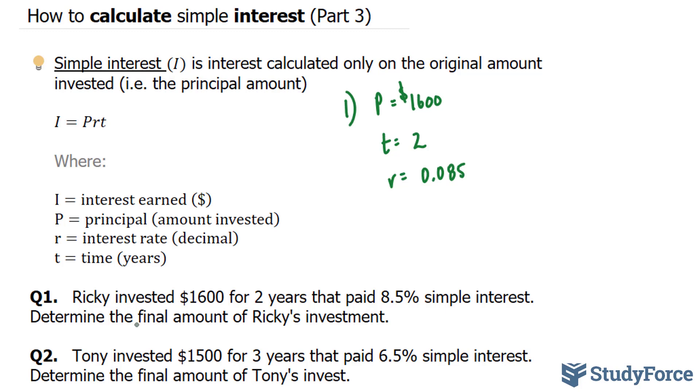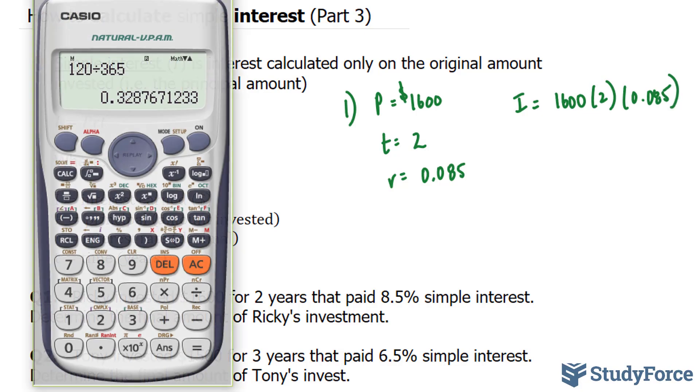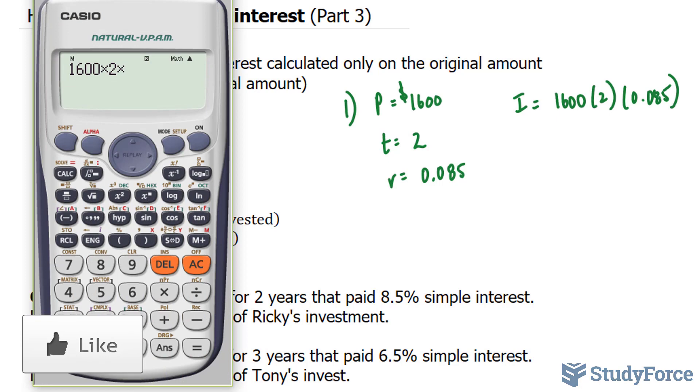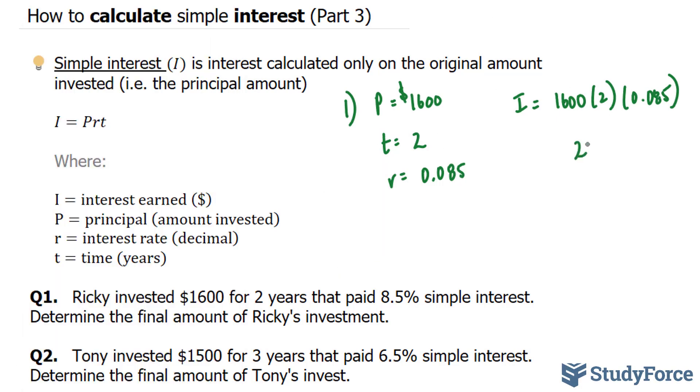So let's go ahead and do that. I is equal to 1,600 times 2 times 0.085. Let's use our calculator. 1,600 times 2 times 0.085. And this gives us $272.